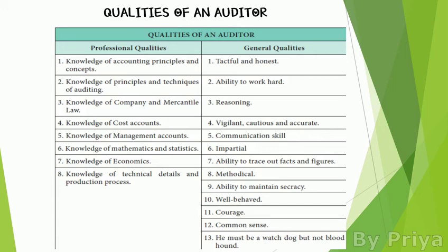The auditor must be impartial — they should not support any particular group or person to safeguard them. They must also have the ability to trace out facts and figures, finding mistakes in invoices, understanding how those mistakes occurred, and detecting what sort of manipulation has been done.